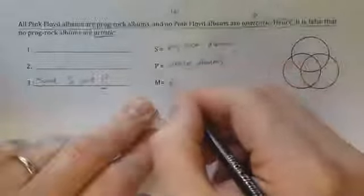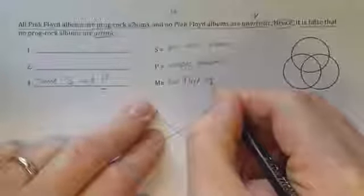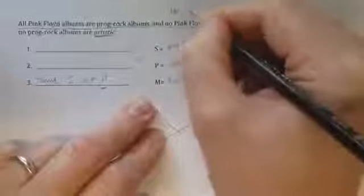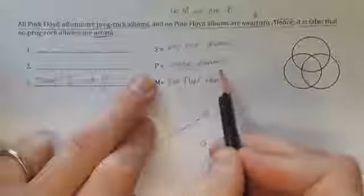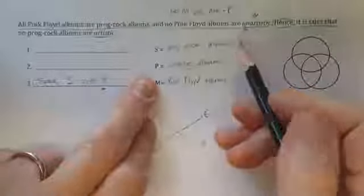So, we can recognize that this proposition has the form no M, where M stands for Pink Floyd albums. No M are non-P. Because P was defined as artistic albums and this says unartistic, meaning unartistic albums.